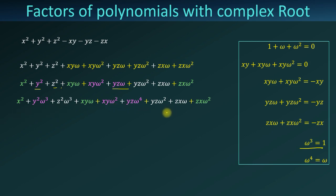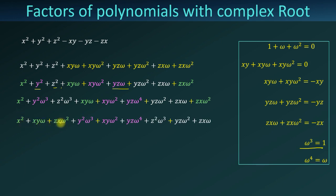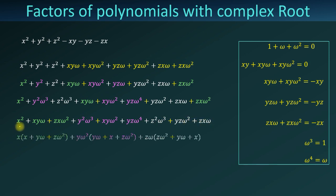Now we will regroup the terms to take common factors, which gives us: x squared plus xy·omega plus zx·omega squared, plus y squared·omega cubed plus xy·omega squared plus yz·omega to the fourth power, plus z squared·omega cubed plus yz·omega squared plus zx·omega.